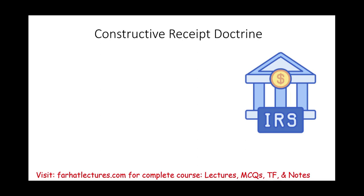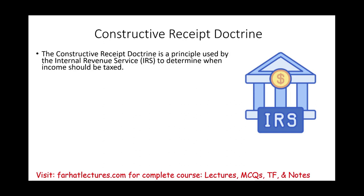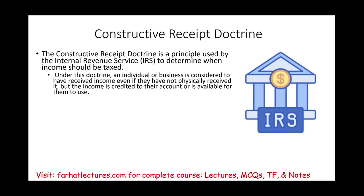What is the constructive receipt doctrine? It is an IRS principle to determine when income should be taxed. If the IRS believes you have access to the money, if the money is credited to your account, if the money is available to you, then you did receive it. If you have access to it, you should pay your taxes. Under this doctrine, an individual or business is considered to have received income even if they didn't physically receive it.